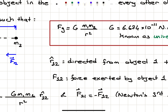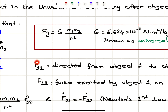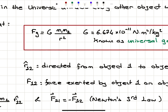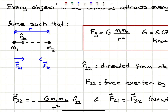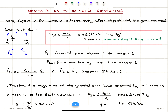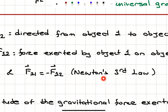R̂₁₂ is a unit vector directed from object 1 to object 2. F₁₂ denotes the force exerted by object 1 on object 2, so F₁₂ acts on object 2. The force exerted by 2 on 1 acts on 1. These two forces form a force couple and, according to Newton's third law, they are equal in magnitude and opposite in direction — an action-reaction pair.